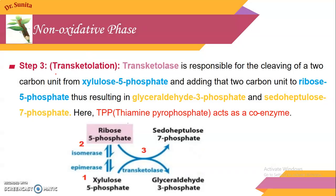The third step is transketolation, where the transketolase enzyme catalyzes this reaction. During this reaction, a 2-carbon unit is cleaved from xylulose-5-phosphate, which is a 5-carbon compound. This 2-carbon unit is removed and attached to ribose-5-phosphate to form the product sedoheptulose-7-phosphate. The remaining part of xylulose gives glyceraldehyde-3-phosphate, a 3-carbon compound. So the products of this transketolation reaction are sedoheptulose-7-phosphate and glyceraldehyde-3-phosphate.